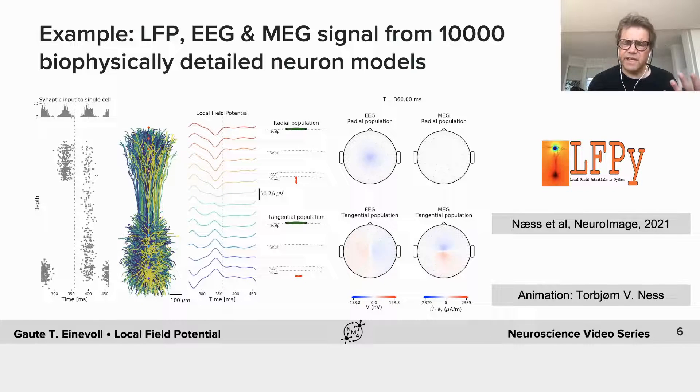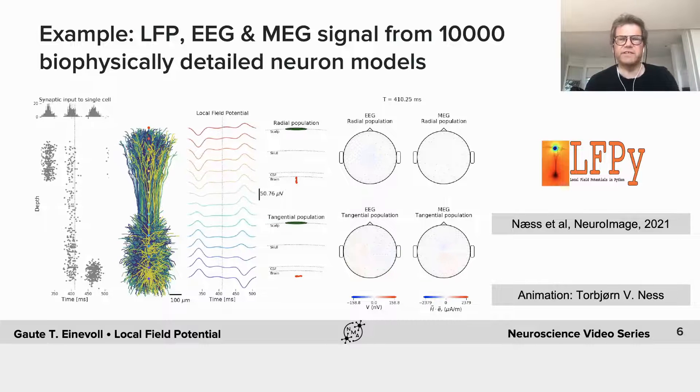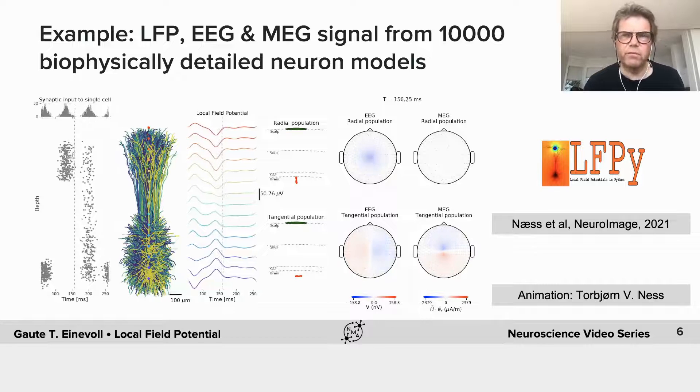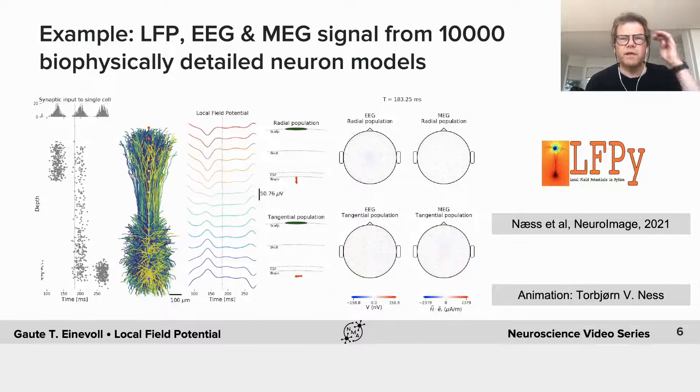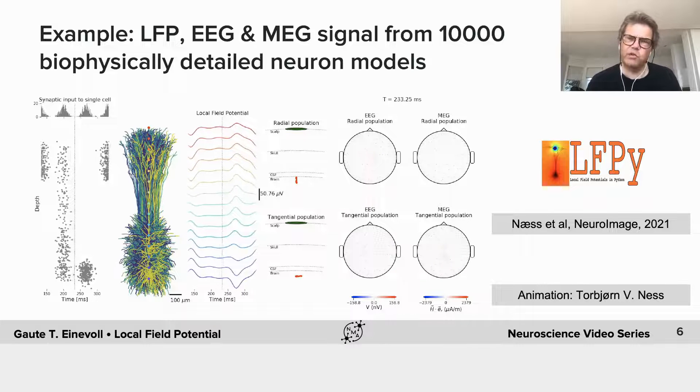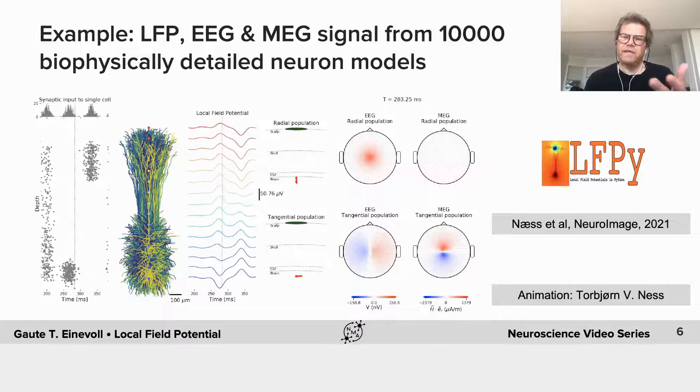So this just illustrates that in any kind of neural model, in this case a very simple model with 10,000 neurons, you can sort of compute essentially all the signals.